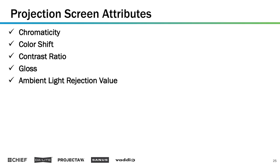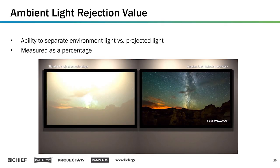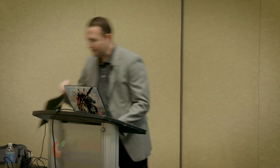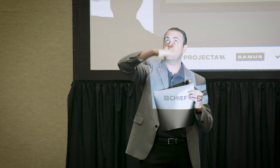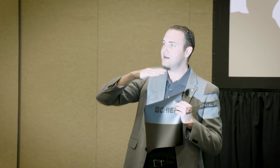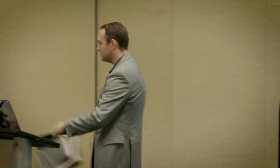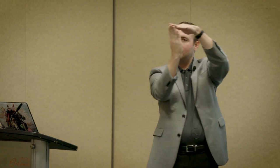Ambient light rejection is the ability to separate environment light versus projected light — the ambient light in the room versus the light we want to see. Something like the Daylight Parallax has a lensing system inside of it with layers parallel to the ceiling that absorb the ambient light, keeping it from reaching the audience. Underneath those are layers slightly angled back toward us that return the projected light. Think of this happening thousands of times within that screen.